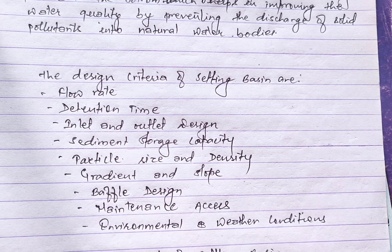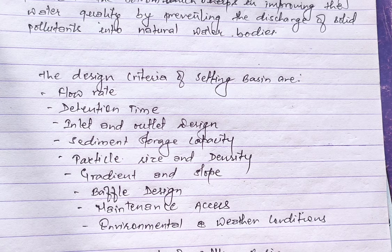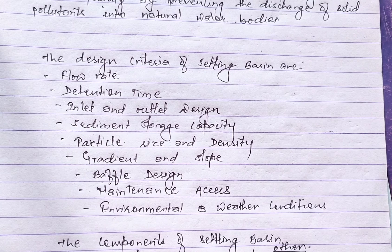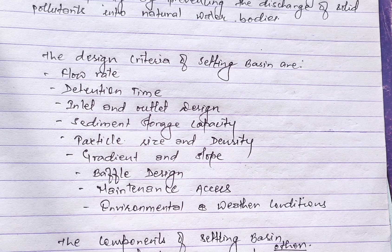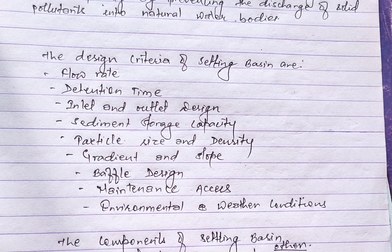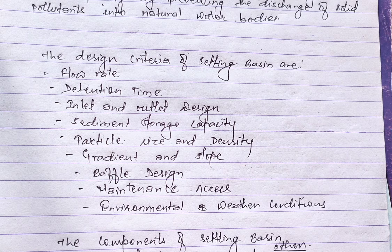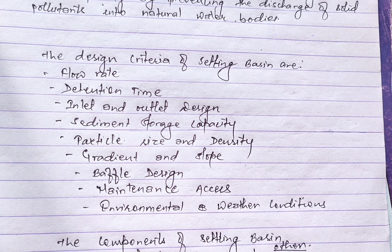Maintenance access to the settling basin is a major requirement for periodic maintenance. The design should facilitate easy access for maintenance activities including sediment removal. The design should also account for potential environmental impacts, ensuring treated water discharge meets regulatory standards. Consideration for local weather conditions such as rainfall patterns is essential to handle peak flow and prevent overflow during extreme weather events.